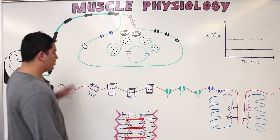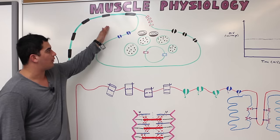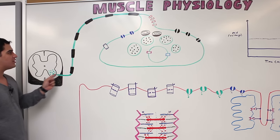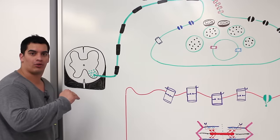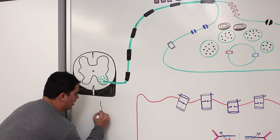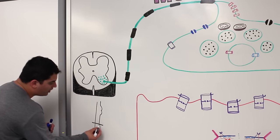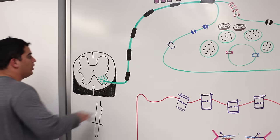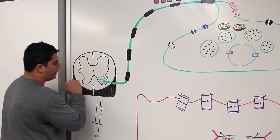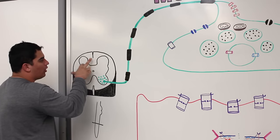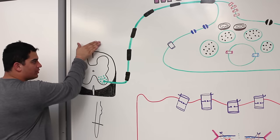To start, we have this long motor neuron and we need to figure out where it's coming from and what it's doing. I've taken a cross-section of the spinal cord — midbrain, pons, medulla, and spinal cord — cutting it and viewing it in cross-section. Here is the posterior part and the anterior side of the spinal cord.